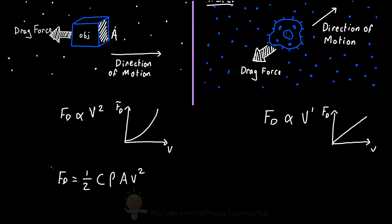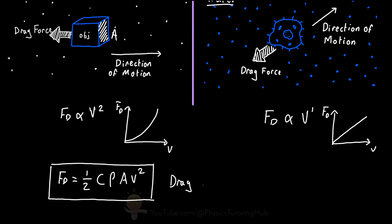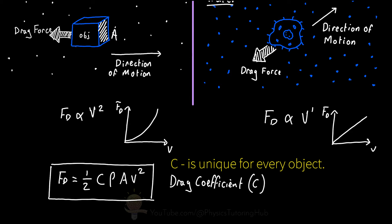From this formula, if our area increases, our drag force will increase. If the density of the air increases, then our drag force increases. And if our drag coefficient increases, our drag force increases. The drag coefficient is unique to every single object that moves through a fluid, and we can only determine what the drag coefficient is for an object by putting it through a wind tunnel.